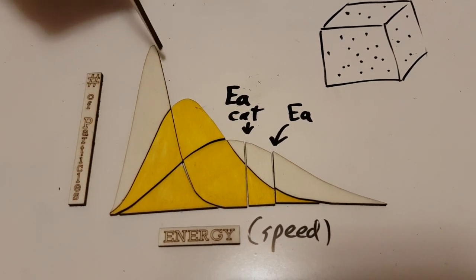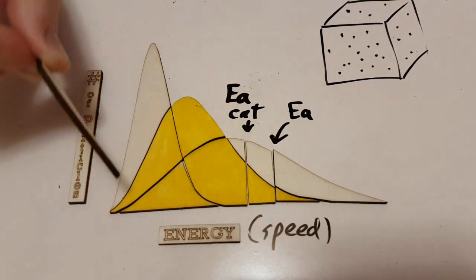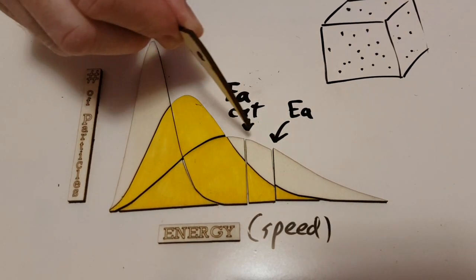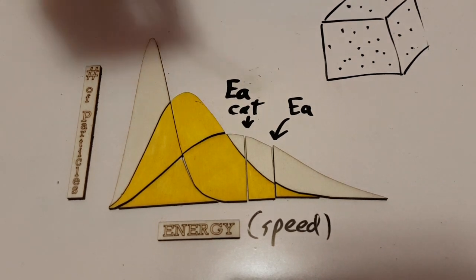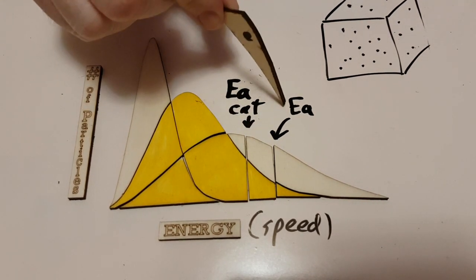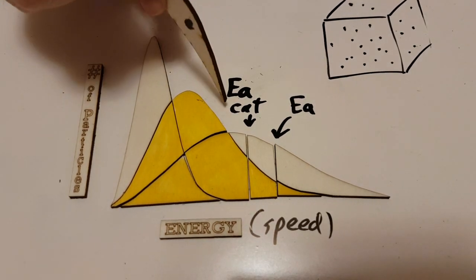This curve here is for the lower temperature. The yellow one is for the medium, and the flatter longer curve is for the higher temperature. Notice that there's the activation energy and the catalyzed activation energy here. The catalyzed activation energy is a lower energy. That's what catalyst does - lowers the activation energy.